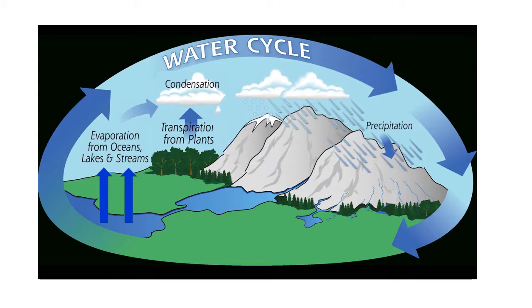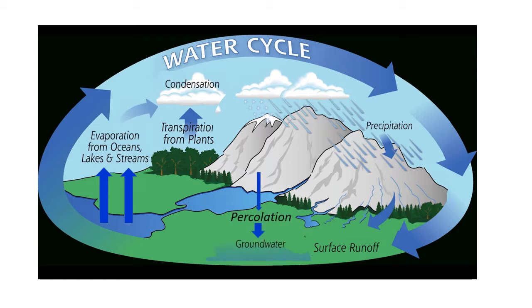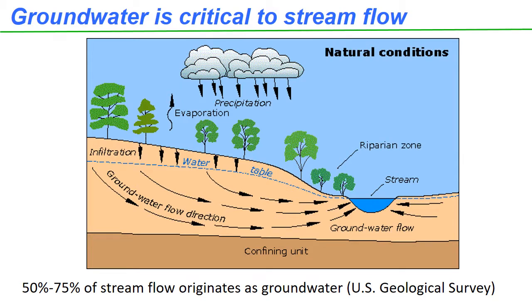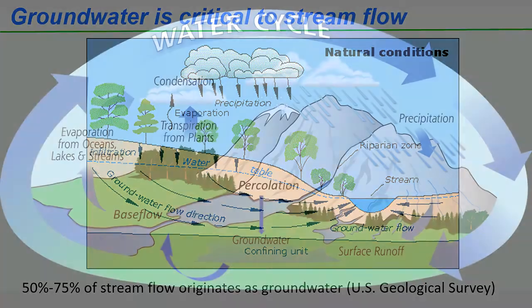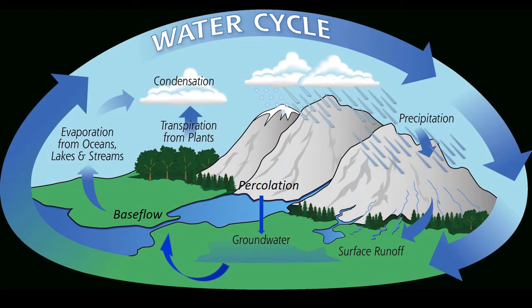Some of the rain runs off the surface of the ground and finds its way into streams, rivers, lakes, and the ocean. And some of the rain soaks down into the soil forming groundwater — this is called percolation or infiltration. Some of that groundwater flows into streams and rivers, forming what is known as a stream's base flow. This base flow is why streams still have water flowing in them even when it's not raining. This process repeats itself over and over in what we call the hydrologic cycle, or the water cycle.